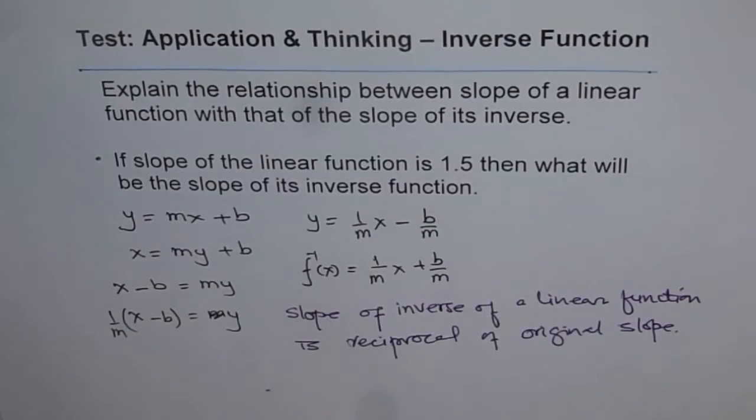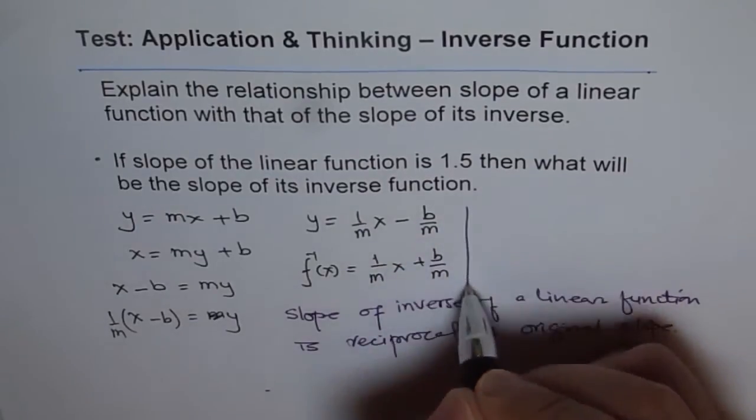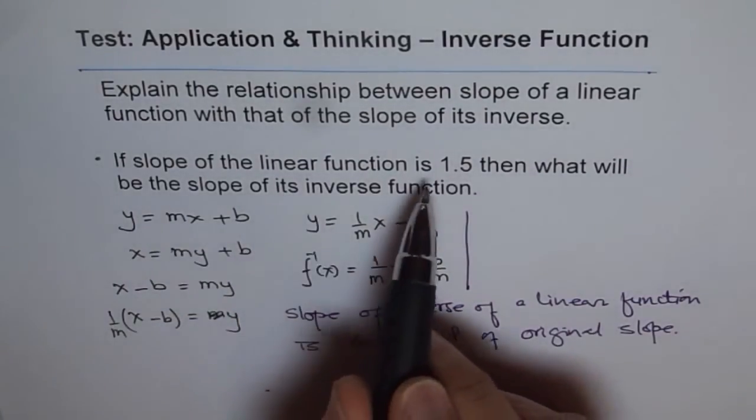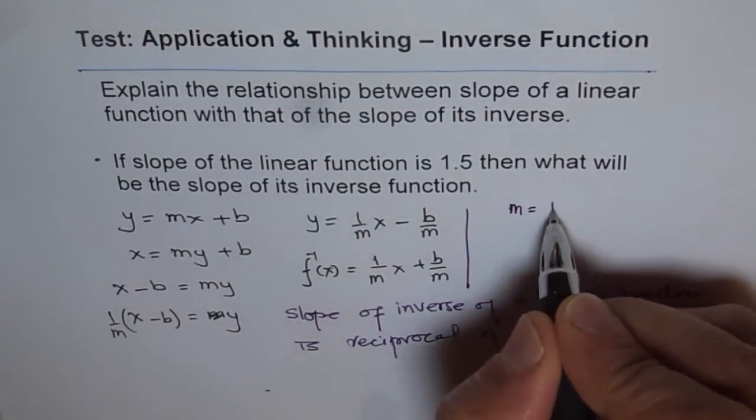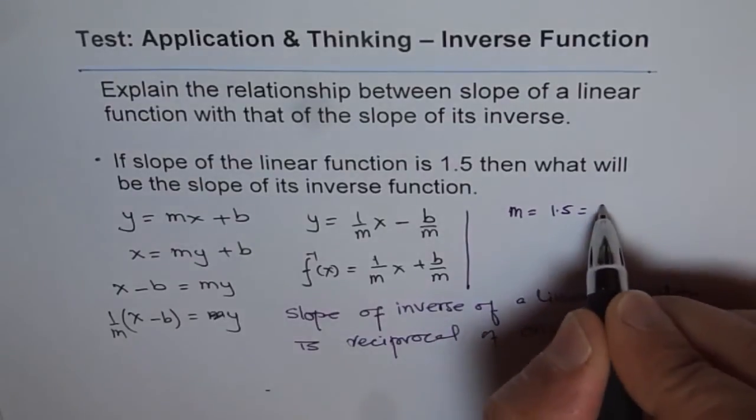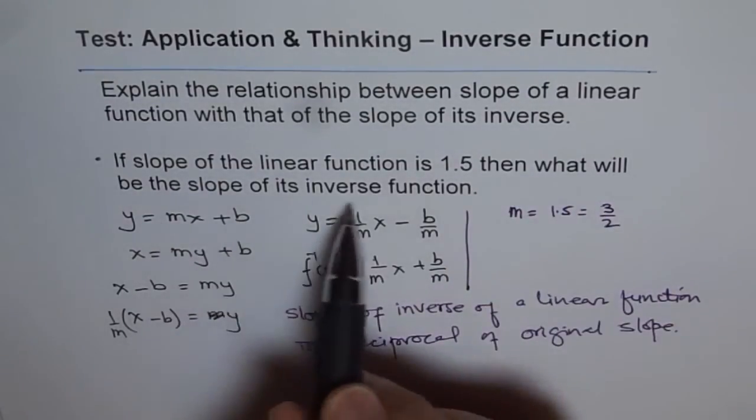Now the problem to test is if slope of a linear function is 1.5, so that means if m equals 1.5, which is 3 over 2, then what will be the slope of its inverse function?